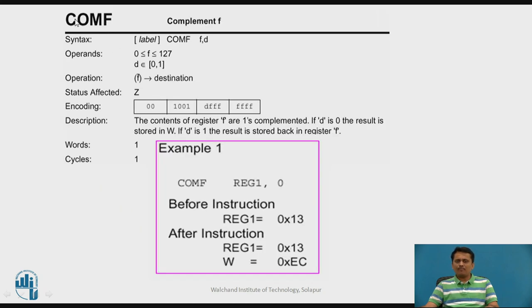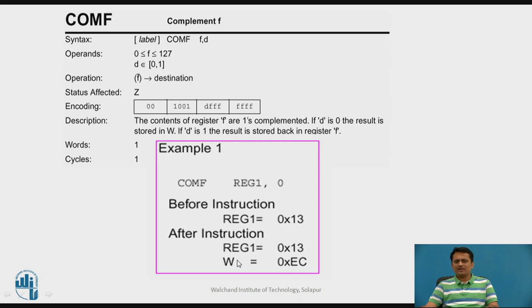The complement instruction performs a one's complement: if a bit is 1 it becomes 0, and if it is 0 it becomes 1. All 8 bits of the file register are complemented and the result goes to the destination. If the complemented result is 0, the zero flag is affected. For example, complementing REG1 with D-bit 0: value 13 hex converted to binary, bits flipped, gives EC hex, stored in the working register.